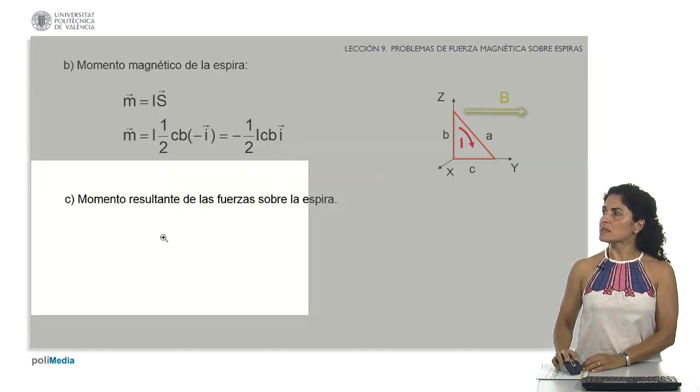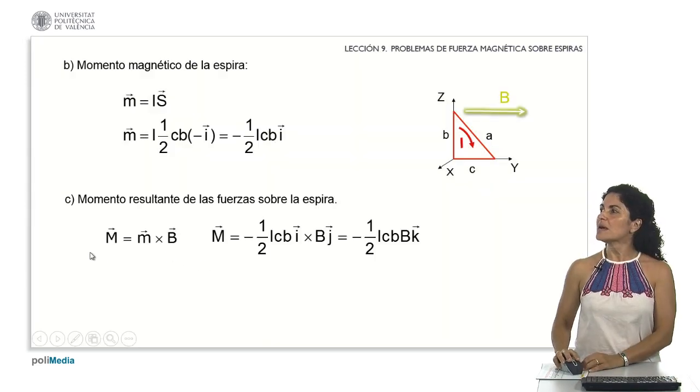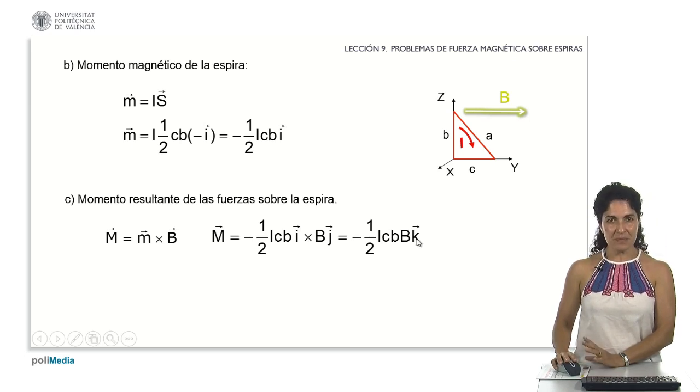What about the moment resulting from the forces acting on the spiral? Just as before, the moment resulting from the forces is obtained by multiplying the magnetic moment with the field vector. The magnetic moment yields a result that indicates a magnitude of one-half of the current multiplied by C times B and times the field's magnitude in the negative K direction. It rotates according to this direction and sense.